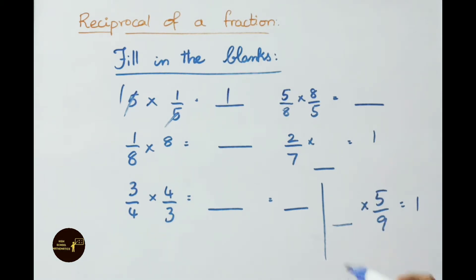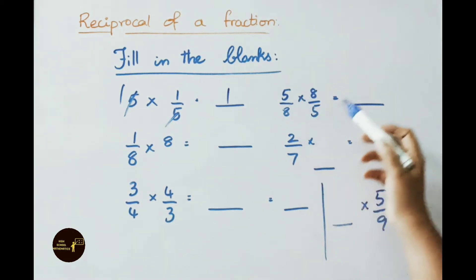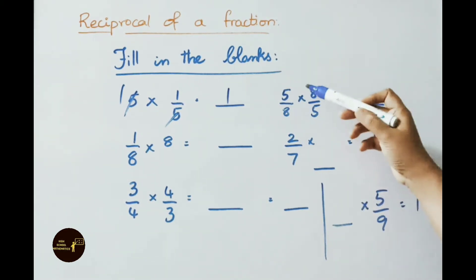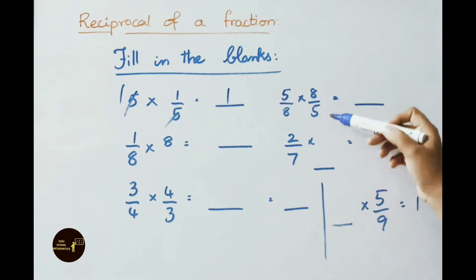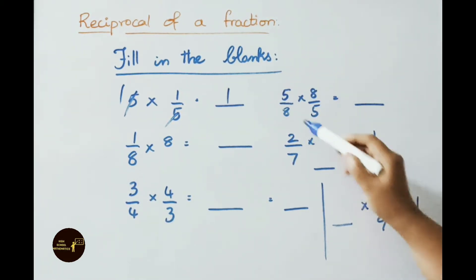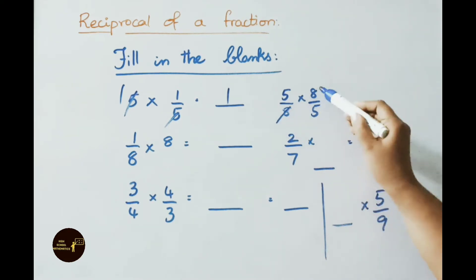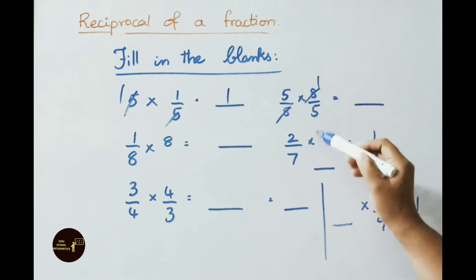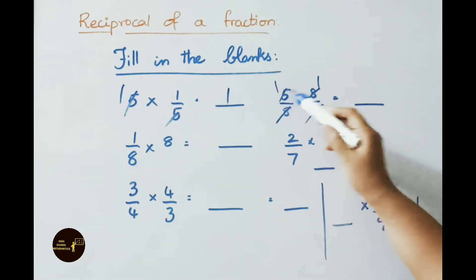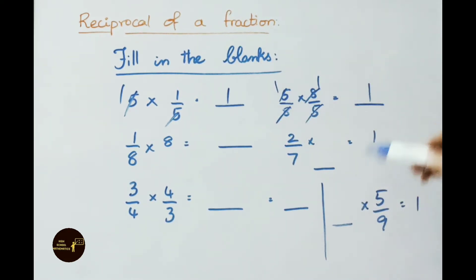See the next one: 5/8 × reciprocal of 5/8 is 8/5. 8 and 8 cancel one time, 5 and 5 cancel one time. So 1 × 1, answer is 1.